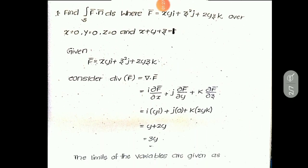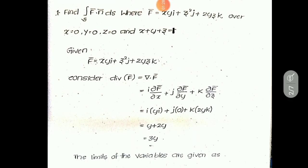Let us have a problem: find the integral over S of F̄·N̄ dS, where F̄ equals XY·î + Z²·ĵ + 2YZ·k̂, over the region where X≥0, Y≥0, Z≥0, and X + Y + Z = 1.